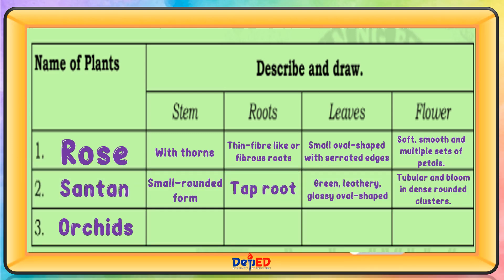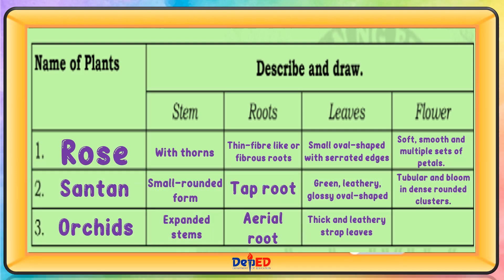Orchids. Stem: expanded stems. Roots: aerial root. Leaves: thick and leathery chopped leaves. Flower: small, colorful flowers with three petals and three sepals.